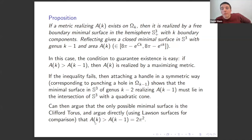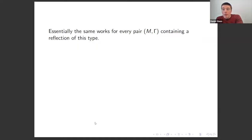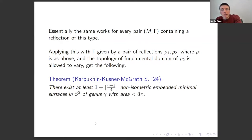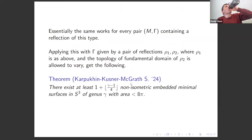It's a bit unfortunate that we had to appeal to the resolution of the Willmore conjecture just to verify this inequality. The essential same argument works for every group containing a reflection that cuts our surface into genus-zero pieces. Applying this with Z₂ × Z₂ actions — a pair of reflections where we vary the topology of the fundamental domain — gives the result advertised at the beginning: for any genus γ, there are at least roughly γ/4 + 1 non-isometric embedded minimal surfaces of genus γ with area less than 8π.